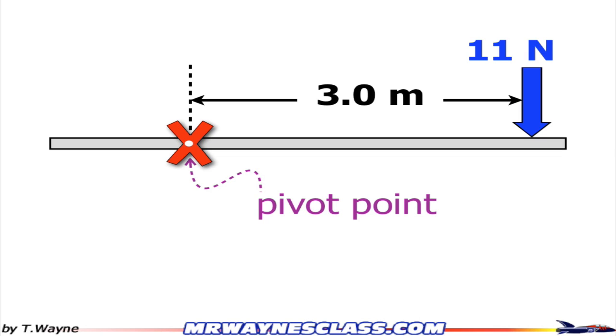This is the video solution to one of the example torque problems. I've got an 11 Newton force that's perpendicular to the three meter distance from the pivot point, also known as the axis or axis of rotation.